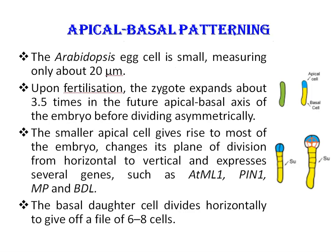First is apical-basal patterning. The Arabidopsis egg cell is small, measuring only about 20 micrometers. Upon fertilization, the zygote expands about three to five times along the future apical-basal axis of the embryo before dividing asymmetrically. The two daughter cells — apical cell and basal cell — differ in fate, division plane, and gene expression.